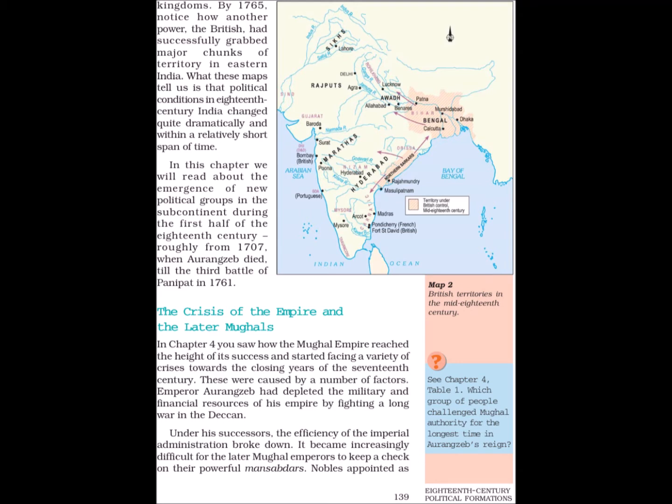The Crisis of the Mughal Empire and the Later Mughals. In Chapter 4, you saw how the Mughal Empire reached the height of its success and started facing a variety of crises towards the closing years of the 17th century. These were caused by a number of factors. Emperor Aurangzeb had depleted the military and financial resources of his empire by fighting a long war in the Deccan. Under his successors, the efficiency of the imperial administration broke down.